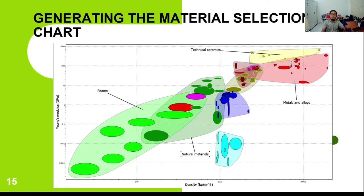From the material index M = E/ρ, we can generate the material selection chart, or material property chart, with Young's modulus on the y-axis and density on the x-axis. This chart is generated using the CES EduPack software, which shows different categories including technical ceramics, metals and alloys, natural materials, and foams.